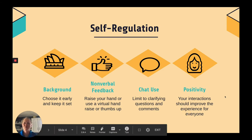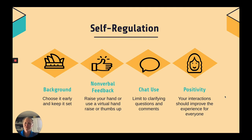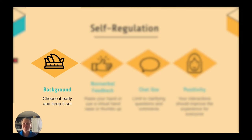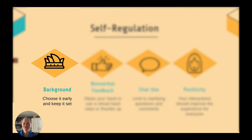Our next point for social emotional learning is going to be self-regulation. It can be very daunting to have other people — maybe strangers or people you know — see what's going on in your home, and you may not feel comfortable with that. A lot of these programs allow you to pick a virtual background, which is fine to do. Just make sure that it's one that's going to work in a professional setting, that you choose it early and keep it set. Don't keep changing it and don't have some crazy background that's going to draw too much attention.